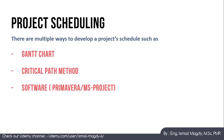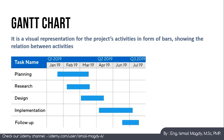There are three different ways to develop a project schedule. First is the Gantt chart, second is using schedule software such as Primavera or MS Project, and the third method is the Critical Path Method.